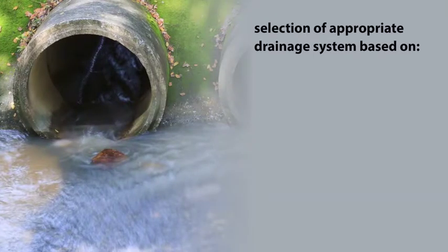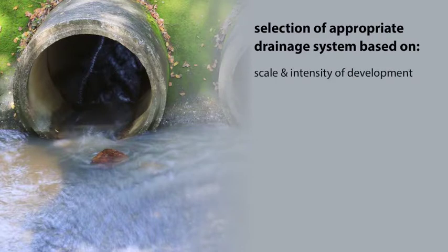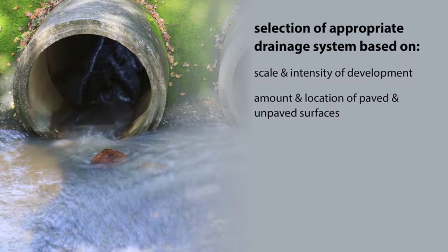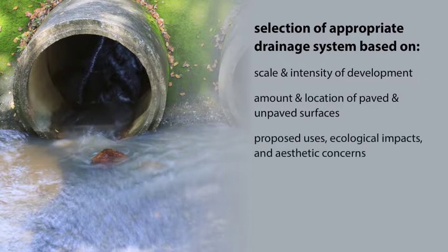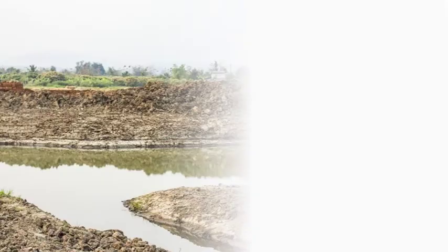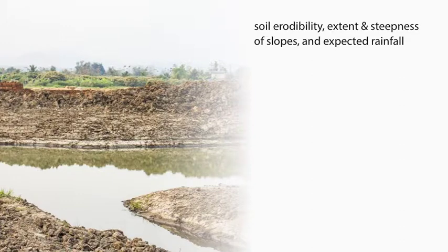The selection of an appropriate drainage system is based on a variety of factors: the scale and intensity of development, the amount and location of paved and unpaved surfaces, and the proposed uses. Ecological impacts and aesthetic concerns must be addressed in making a choice. Physical factors such as soil erodibility, extent and steepness of slopes, and expected rainfall intensities must also be considered.